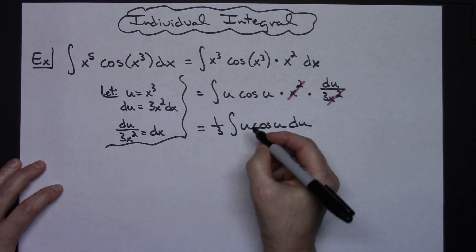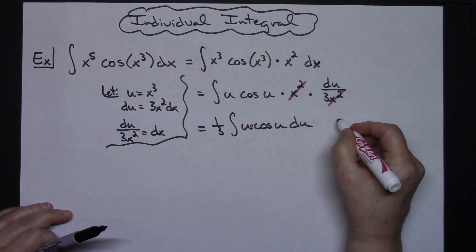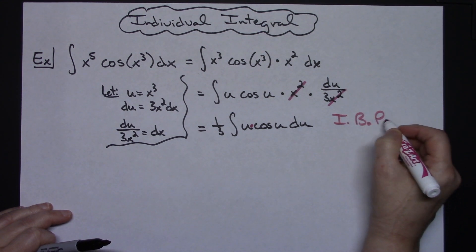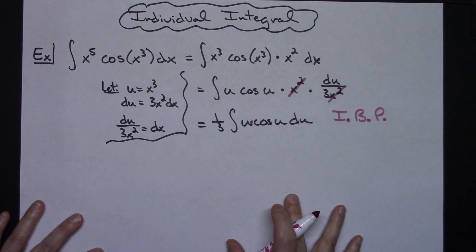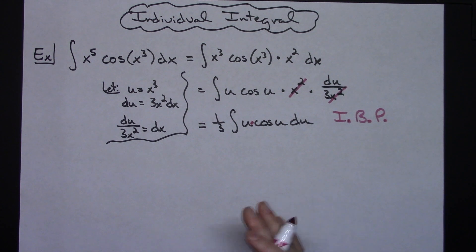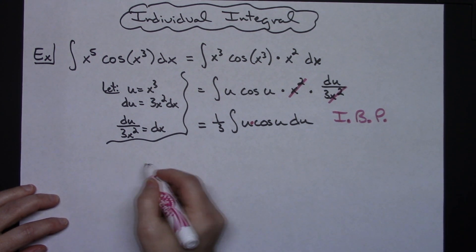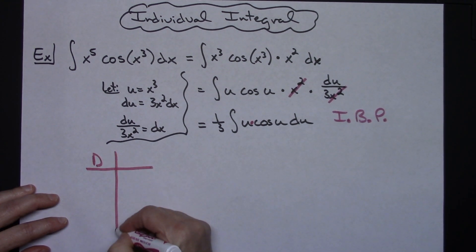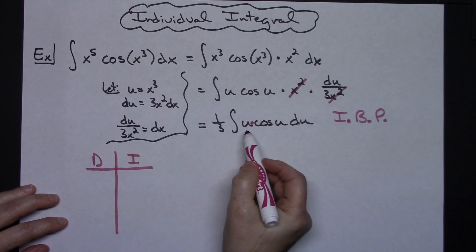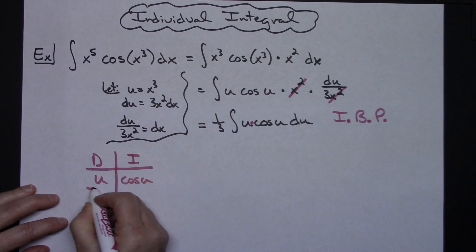At this point I need to recognize that there's a multiplication of two functions, so I need to do integration by parts. I'm going to use a shortcut method. I have another video with many examples using this shortcut, so check the description for that. For this shortcut, I'll set up a derivative column and an integral column. I'll put u in the derivative column and cosine u in the integral column.